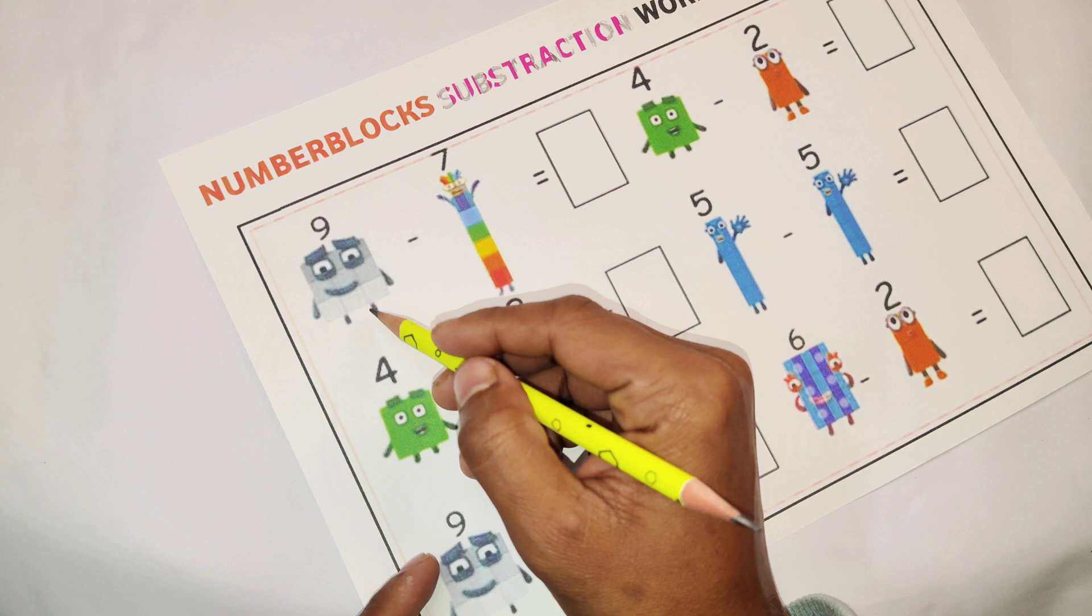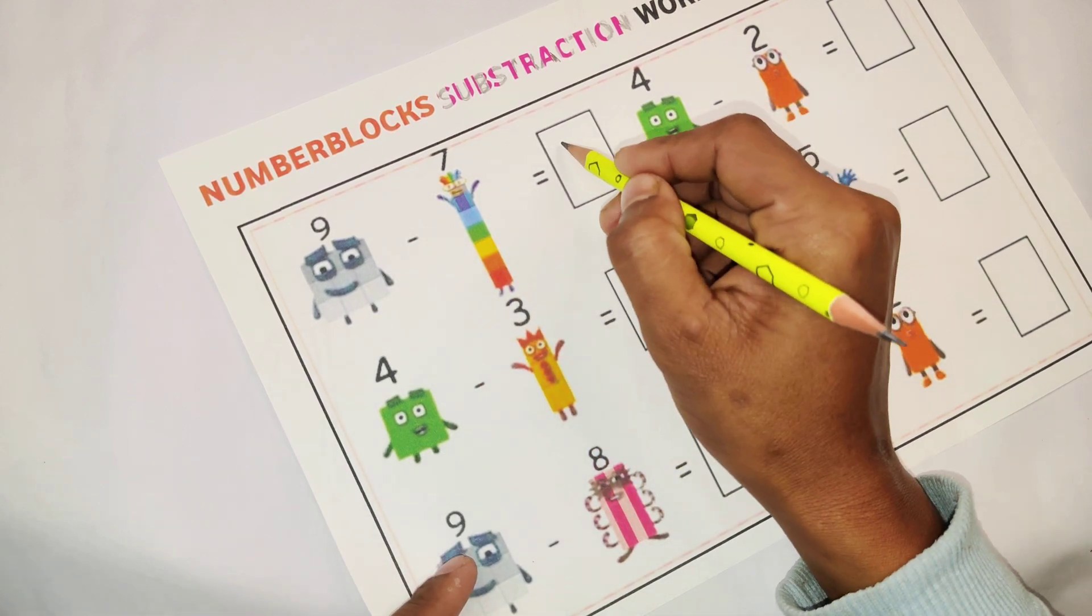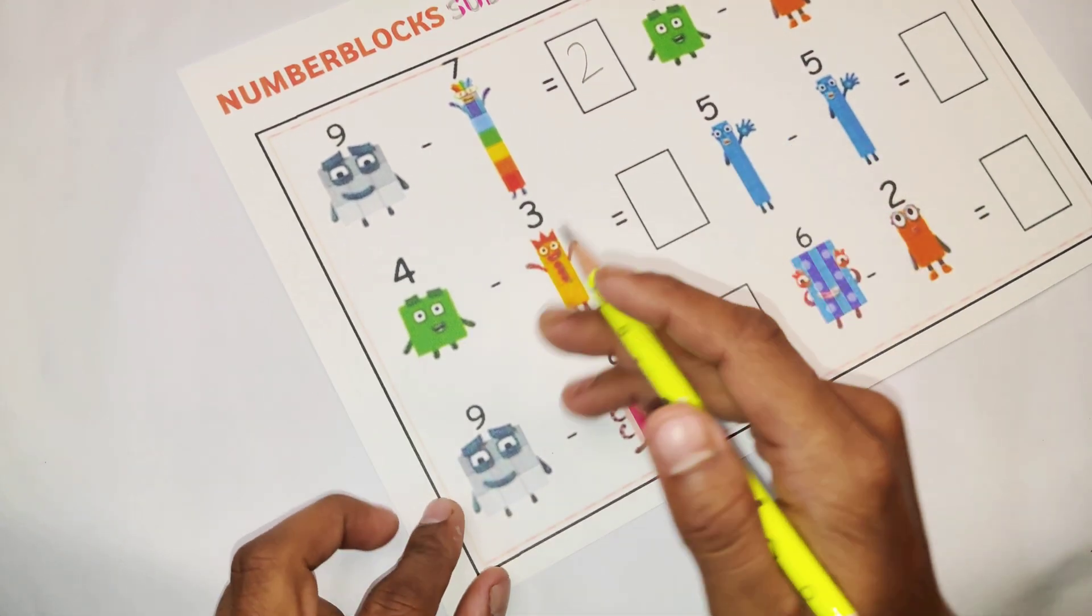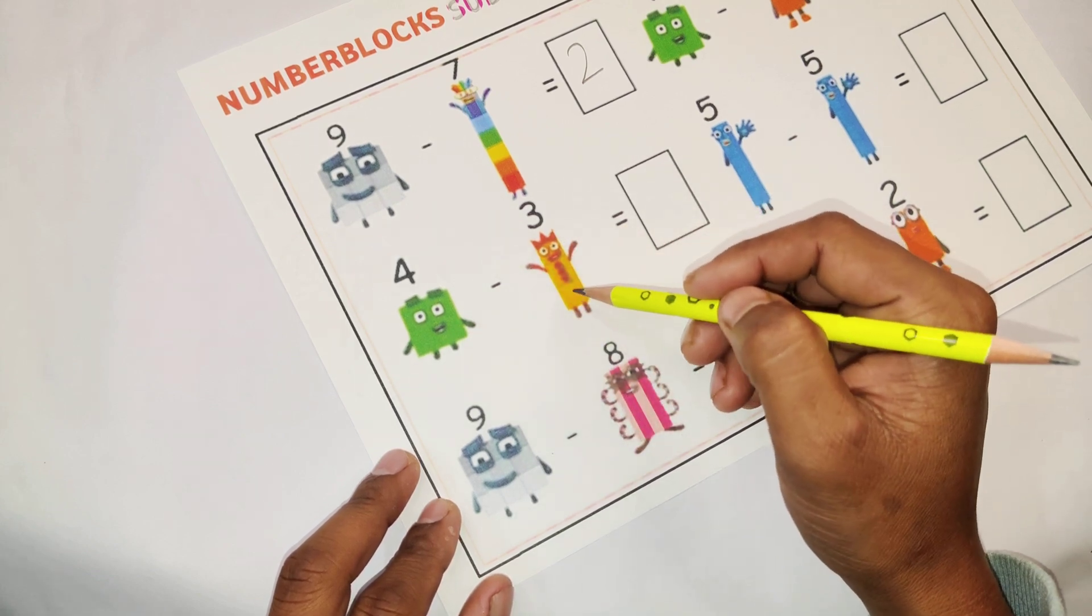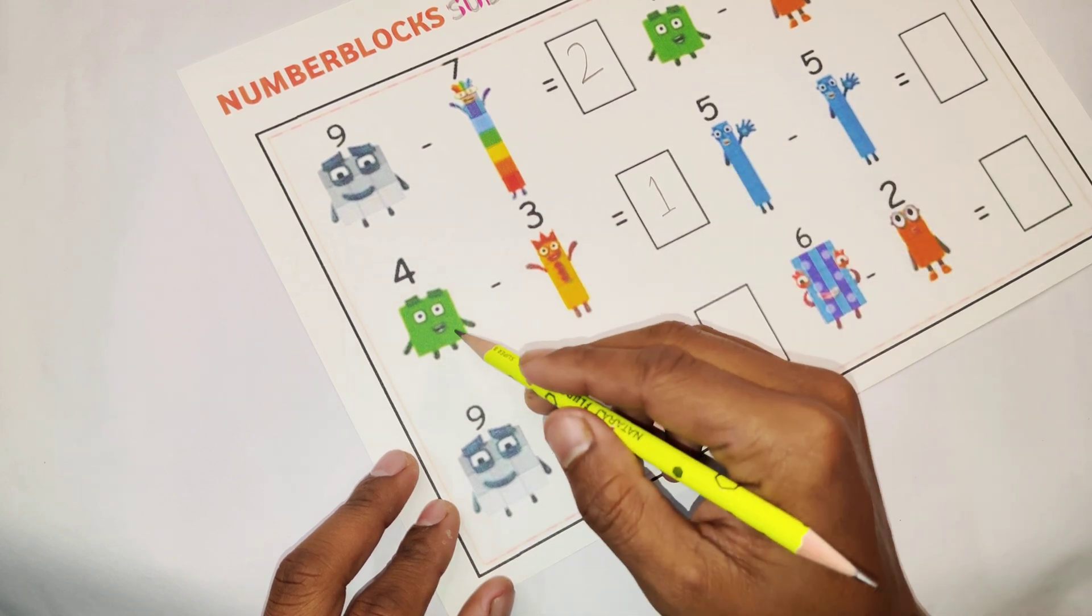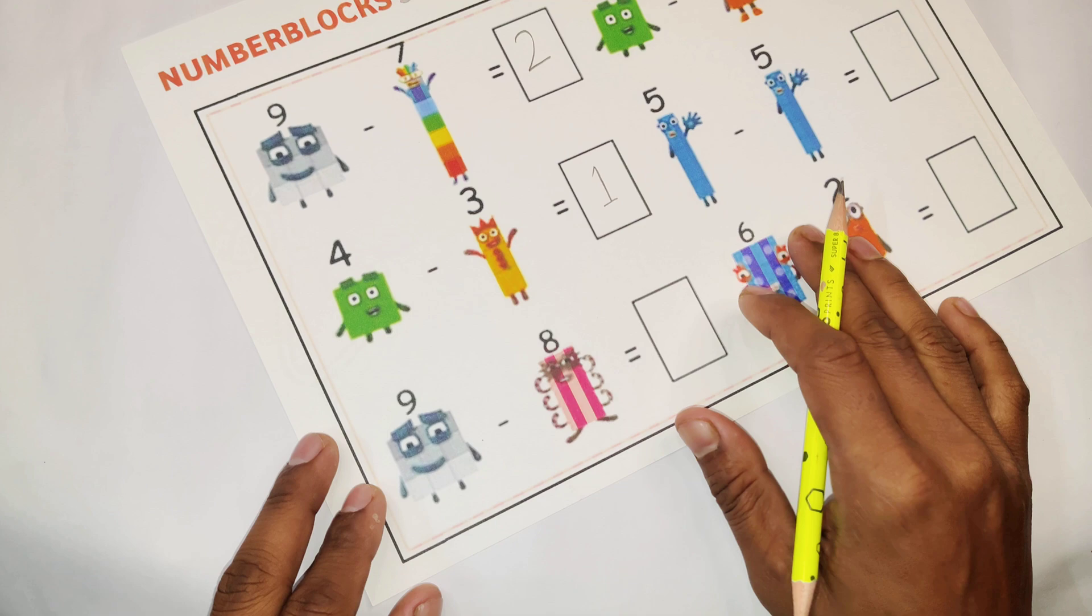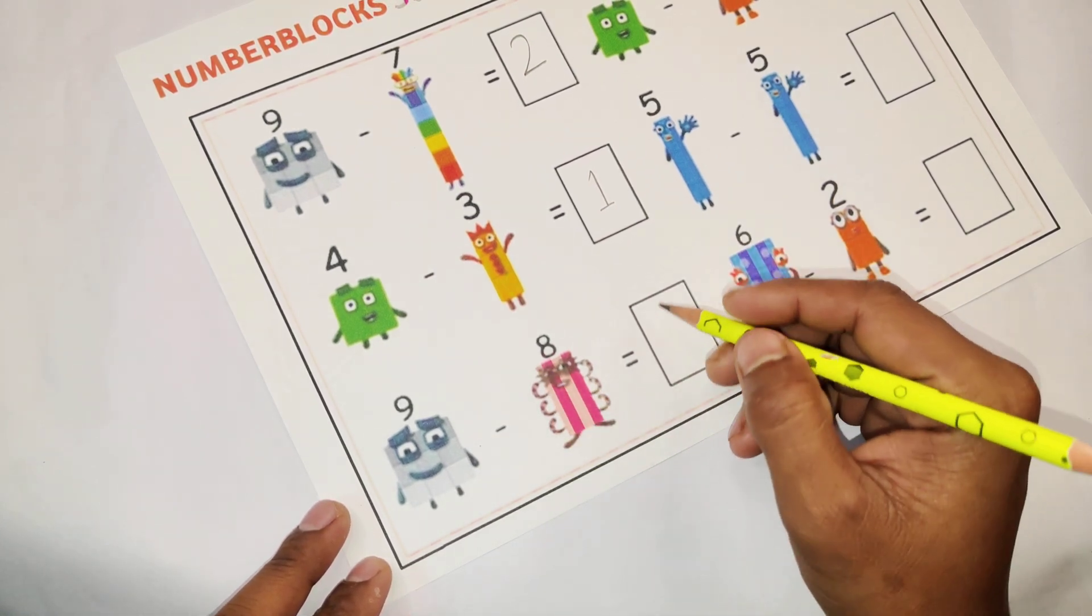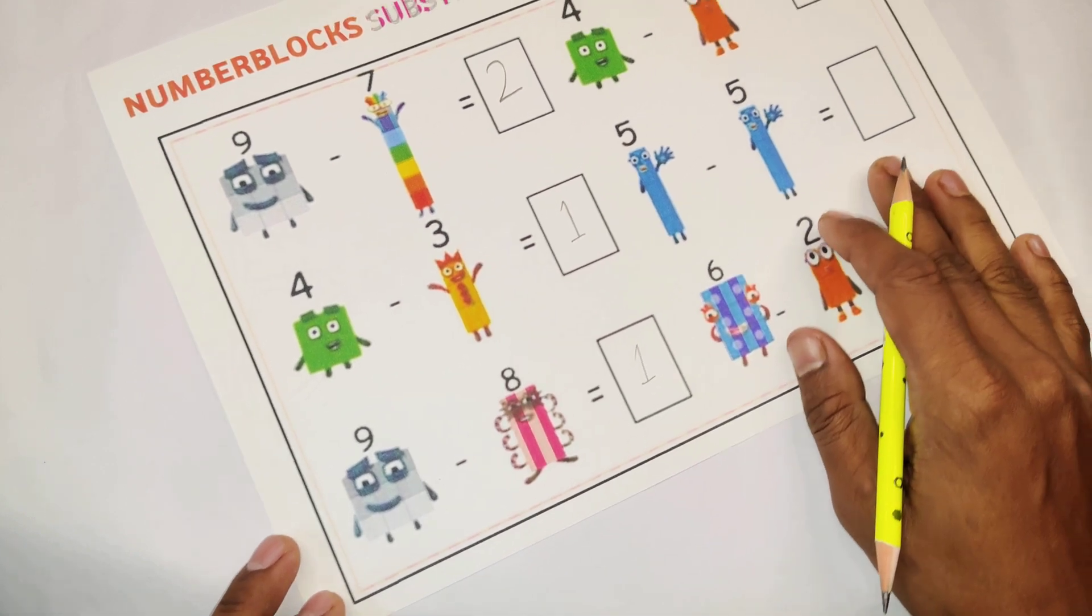9 minus 7. 9 minus 7 is equal to... 4 minus 3. 4 minus 3 is equal to 1. Our next subtraction, 9 minus 8. 9 minus 8 is equal to 1.